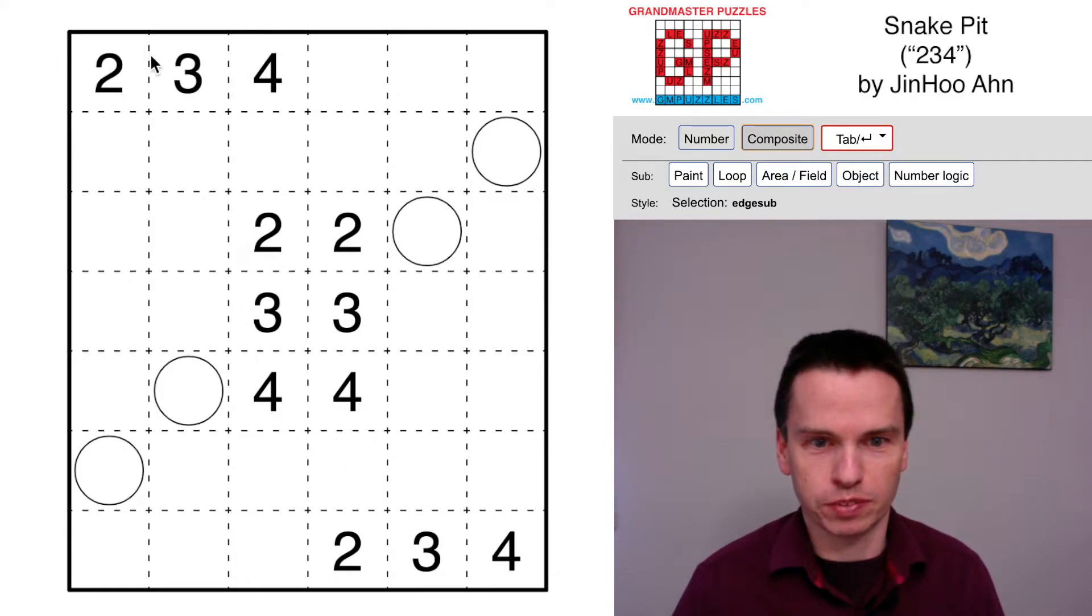In each of these corners we have some single options that go out. This two can only come down, this three has to take at least one cell coming down, and in this other corner this three has to come up and this four has to come up.